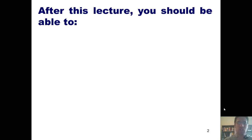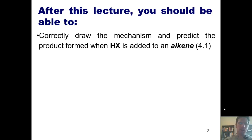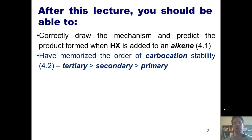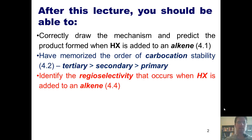After today's lecture, you should be able to correctly draw the mechanism and predict the product formed when HX is added to an alkene — this comes from Section 4.1 of our text — and have memorized the order of carbocation stability: tertiary is more stable than secondary, is more stable than primary.